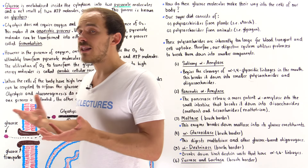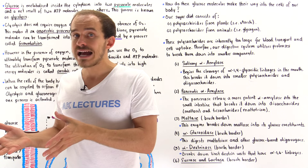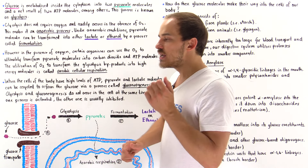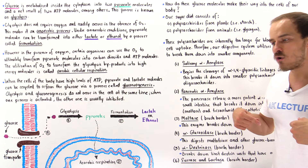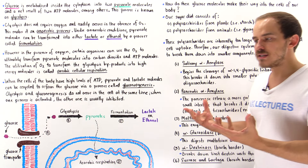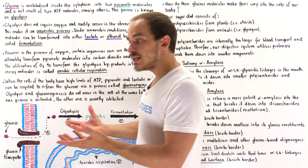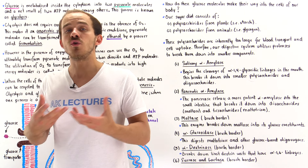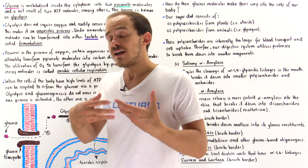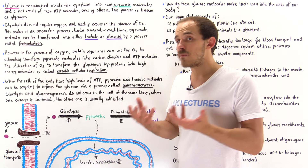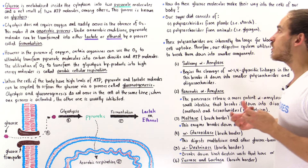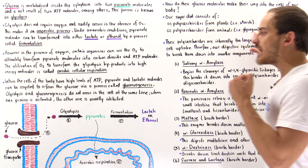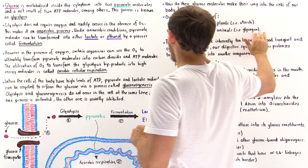We have polysaccharide carbohydrates that come from plants, and polysaccharides that come from animals. For instance, if we eat a piece of chicken, that chicken not only has protein and fat — it also contains polysaccharides, carbohydrates, stored in a form we call glycogen, which is the same form we mentioned just a moment ago.